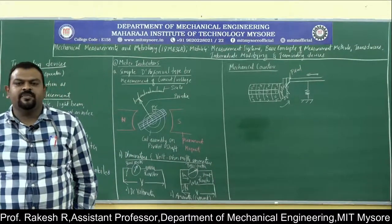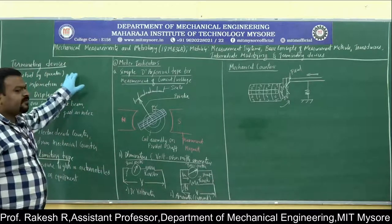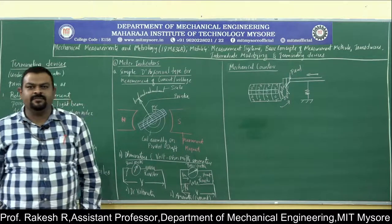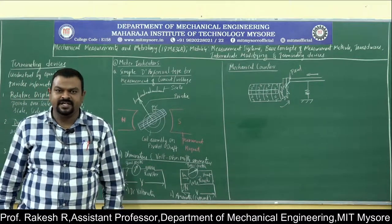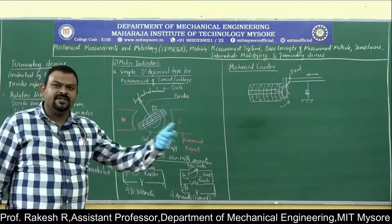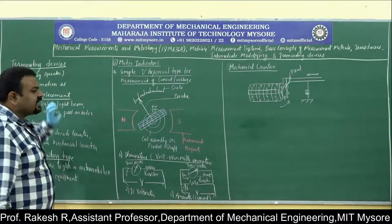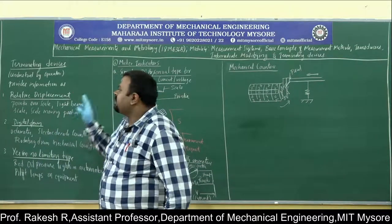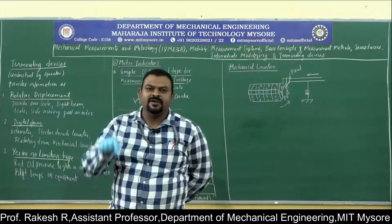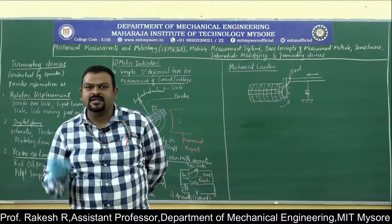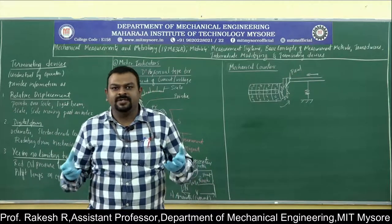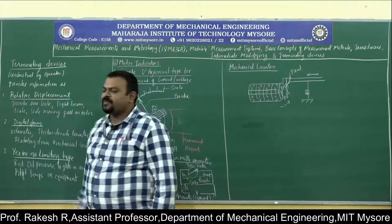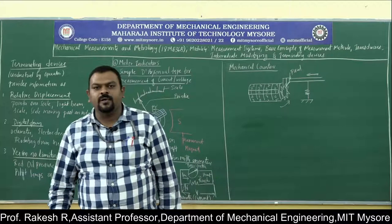Welcome to this session. The next topic is terminating devices. A terminating device is the final stage in the measurement system. Recalling the basic block diagram: the first component is the primary transducer, after that intermediate modifying devices, and then the final terminating devices. Terminating devices help the operator understand what exactly the machine is showing — what is happening in the process or what the result of the input device is.